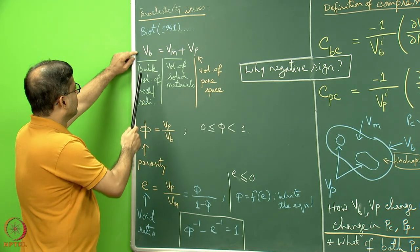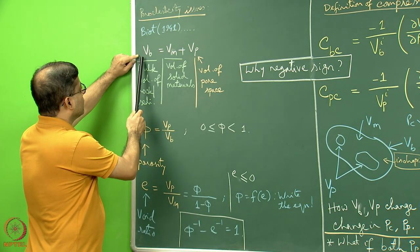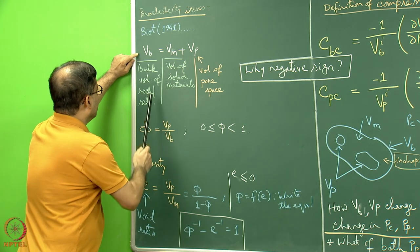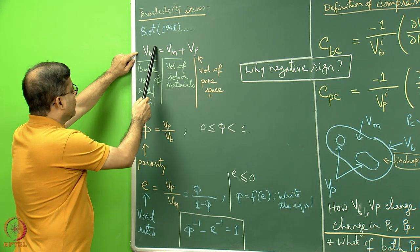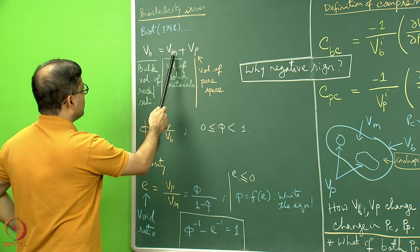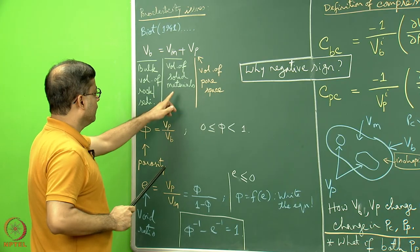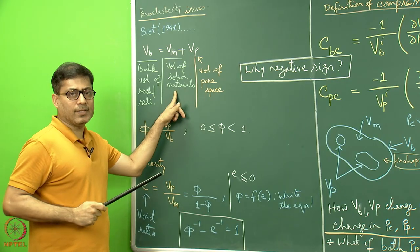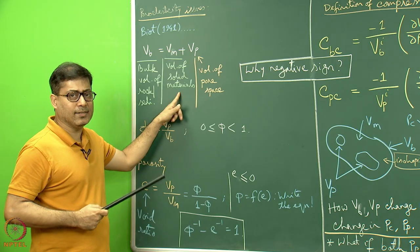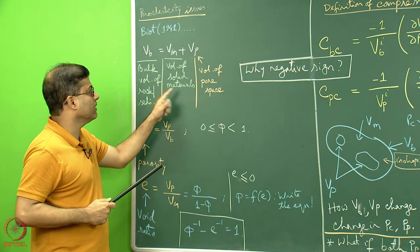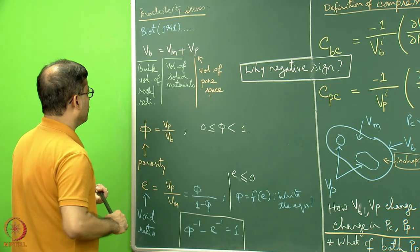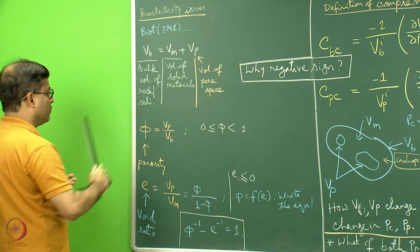We start with the equation Vb equal to Vm plus Vp. The bulk volume of the rock or sediment is called Vb. Vm is the volume of the solid material — for sedimentary rock this includes matrix, cement, and grains — all the solid materials. Vp is the volume of the pore space, and naturally this relation holds true.